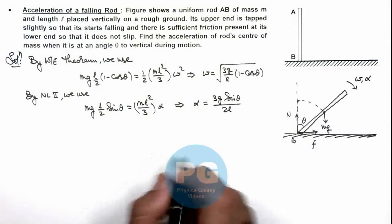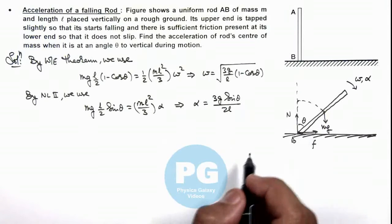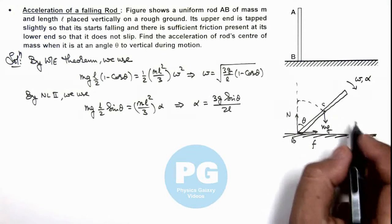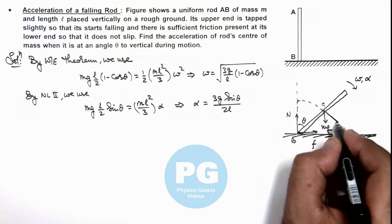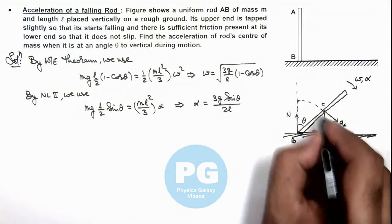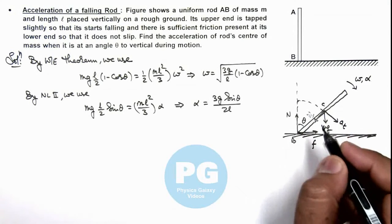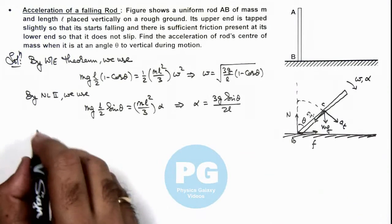Using omega and alpha, we can calculate the acceleration of the center of mass of the rod. One is in the tangential direction, which is a_t, and the other is in the normal direction, which is a_n.